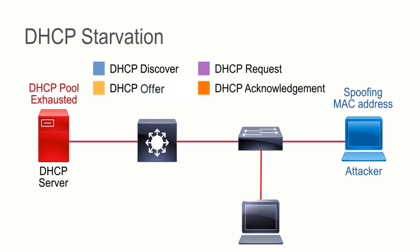Now when this legitimate client comes on and sends his DHCP discover message, that server looks and goes, well, I don't know what to tell you — I don't have any addresses available. And he just doesn't even respond. This real client then does the auto configuration of a 169 address. And he can't get anywhere on the network because the DHCP server has been impacted by a DHCP starvation attack and cannot serve real users.